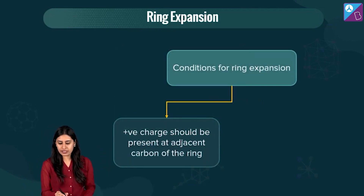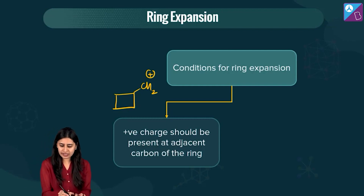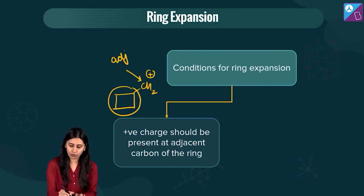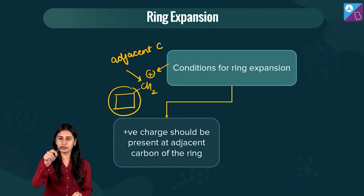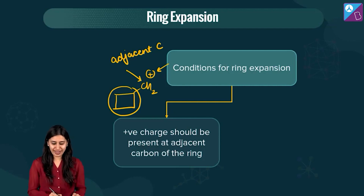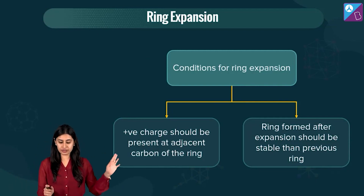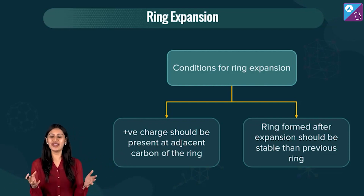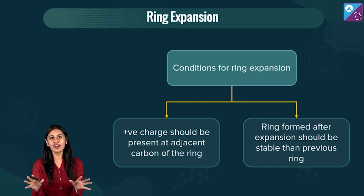The first condition is that a positive charge should be present on the adjacent carbon of the ring — specifically on the carbon directly attached to the ring system. The second condition is that the ring formed after expansion must be more stable than the previous ring. Only then will ring expansion occur.